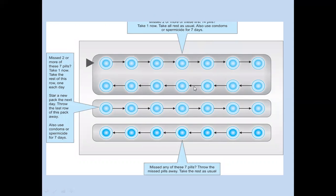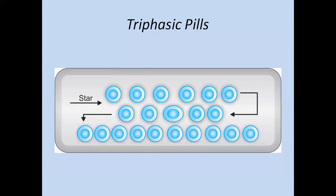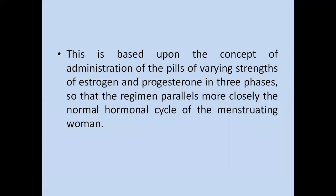An example shows how to take these tablets. If you miss any of the last 7 placebo pills, there is no concern — take the rest as usual, because the 21 active hormonal pills are the ones containing hormones; the last 7 are placebo with iron content. The triphasic pill concept is based on administering pills with varying strengths of estrogen and progesterone in 3 phases, so that the regimen more closely mimics the normal hormonal cycle of menstruating women.